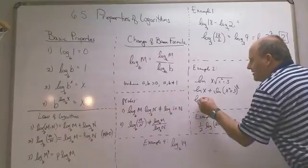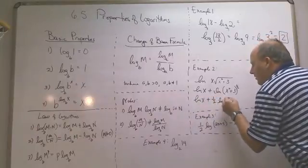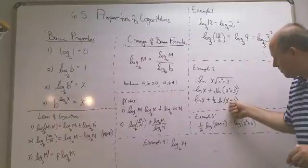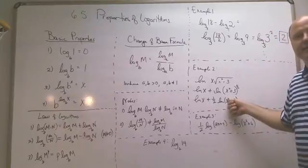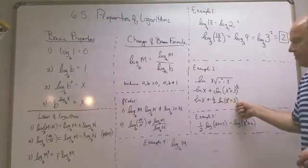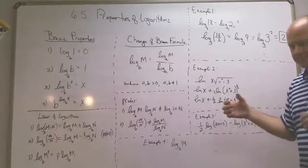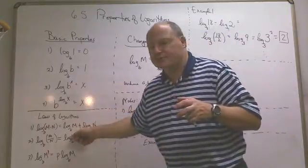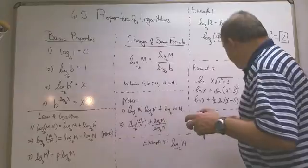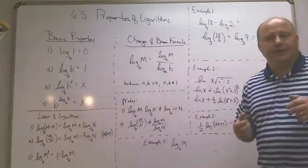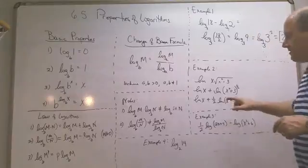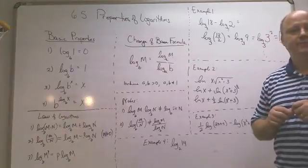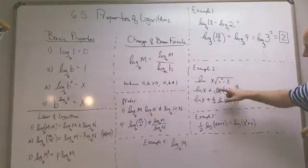An important note: students often want to apply the power rule again to the x squared inside the natural log of (x squared plus 3), but you can't. Because of the plus 3, this is addition — there is no 'plus rule' for logarithms. There is only a product rule and a quotient rule. So when you have x squared plus 3 inside a log, you're done — you cannot break it up further.